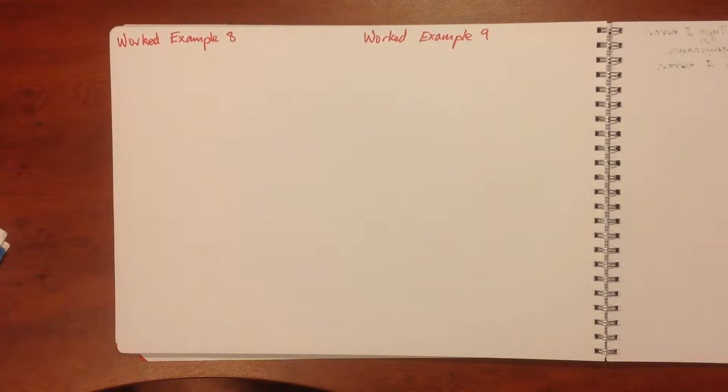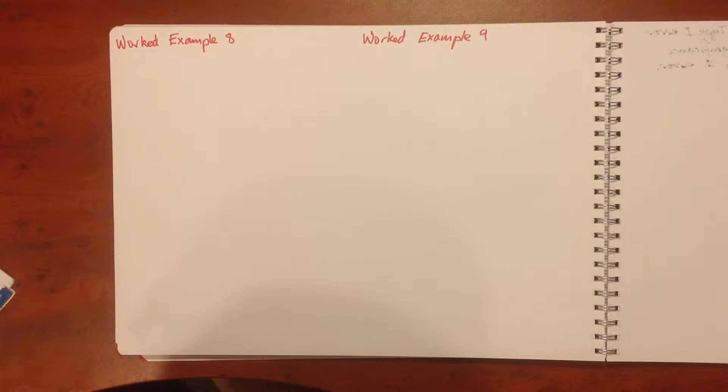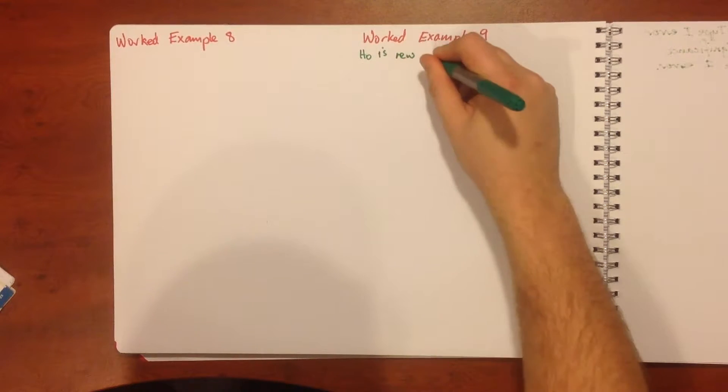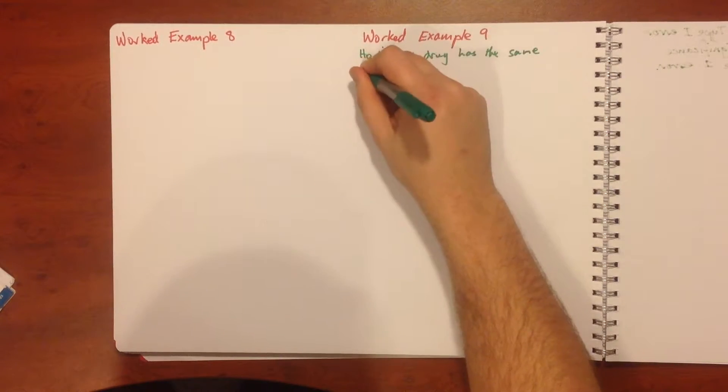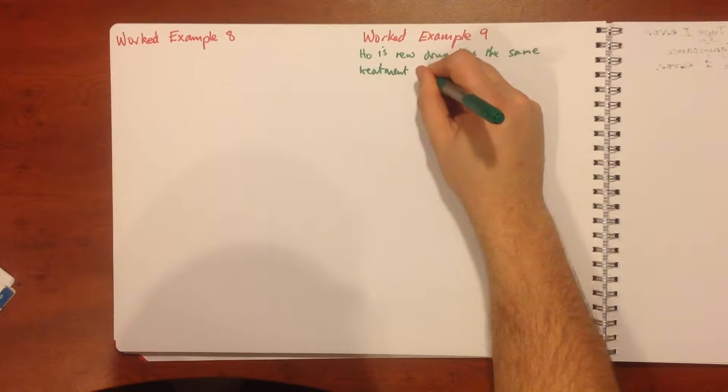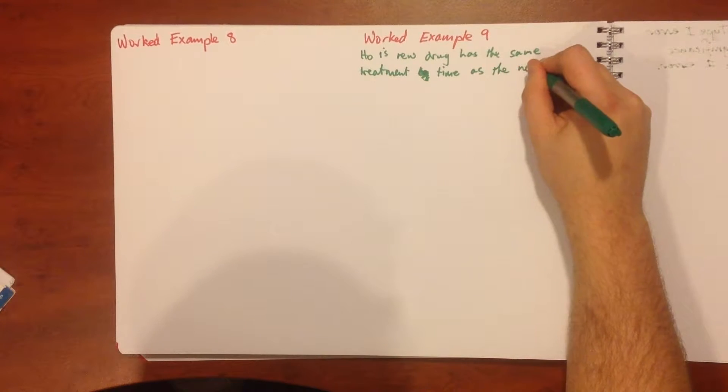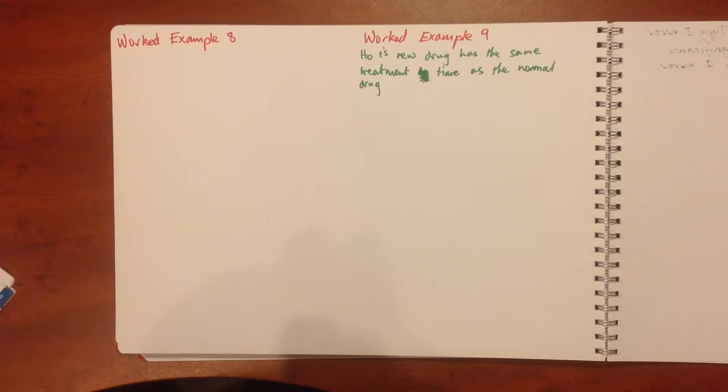There's not really anything to write for work example eight. In work example nine we suppose you are testing a new medication. You're going to conclude that the drug has no effect unless there is sufficient evidence to say otherwise. If a type 1 error was made, what conclusions were reached? Well we need to think our H naught is the new drug has the same treatment time as the normal drug, because we're going to assume unless proven otherwise that it's not going to make any difference.